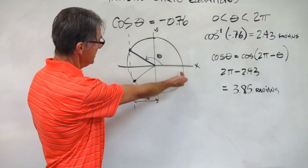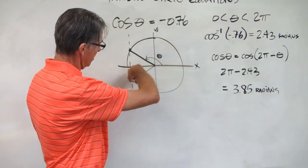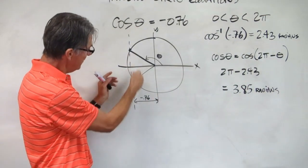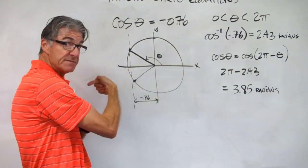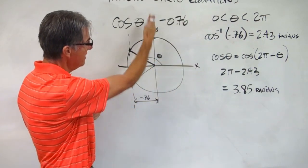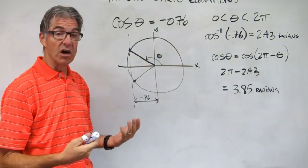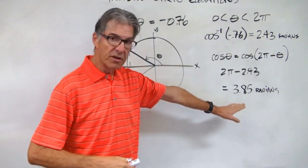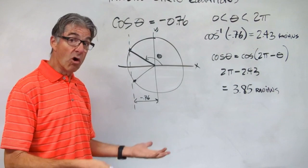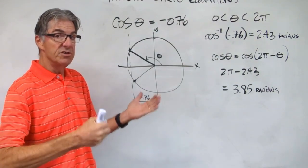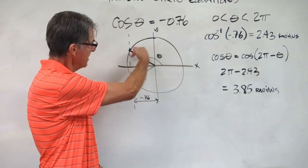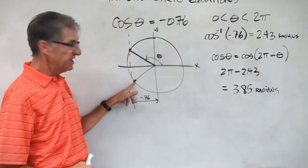That angle comes all the way around to the point where both points have x-value minus 0.76 — they're 0.76 from the y-axis along the x-axis. Let's do a little check: 3.85 radians is a little more than 180 degrees, which is 3.14 radians. So that makes sense — we're at 3.85 radians down there.